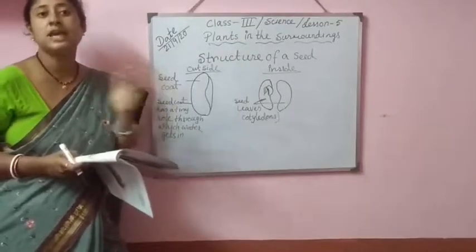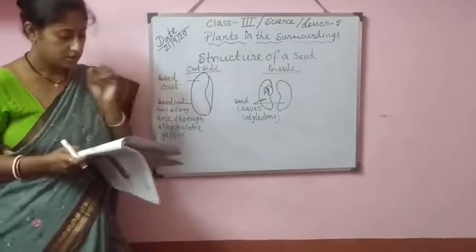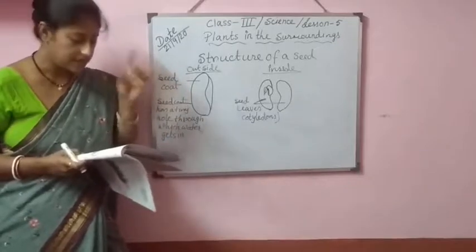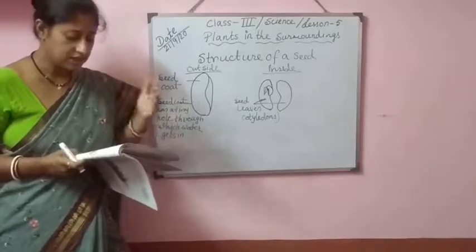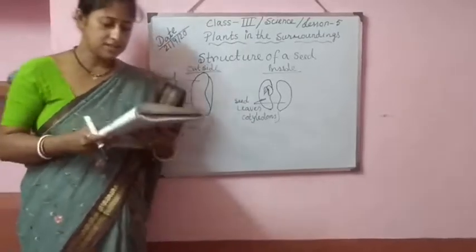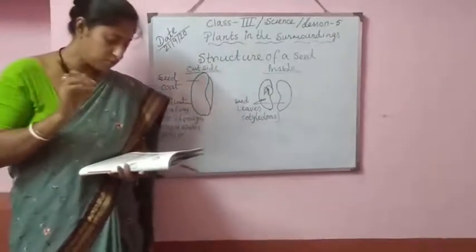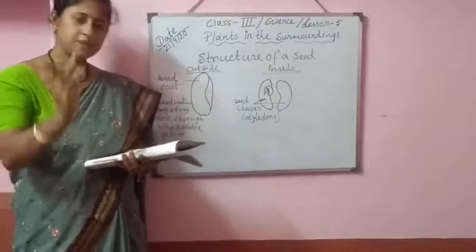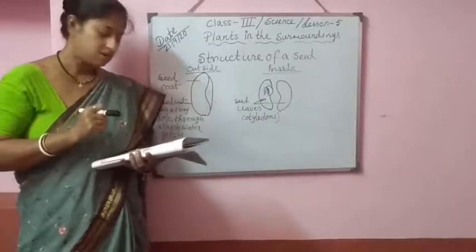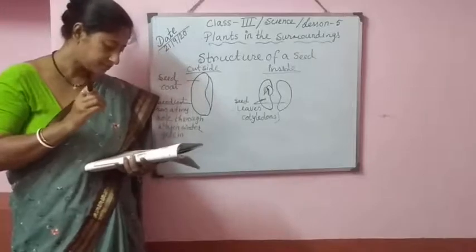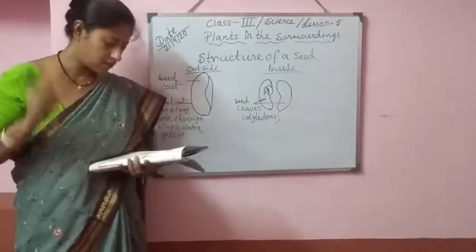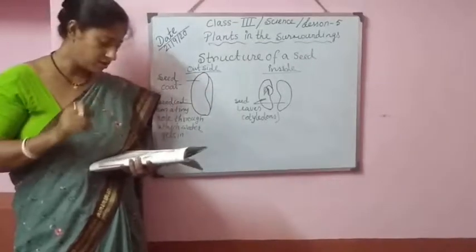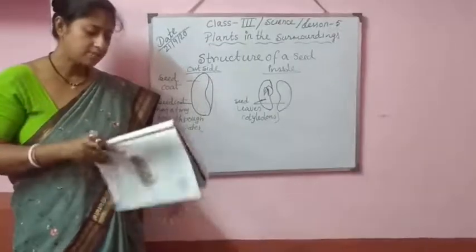If any question comes about the difference between monocot seed and dicot seed: the first difference is that monocot seeds have a single cotyledon, meaning one cotyledon, and dicot seeds have two cotyledons. Monocot seeds produce plants with long and narrow leaves, and dicot seeds produce plants with different shapes and sizes. Examples of monocot seeds are wheat, corn, and rice. Examples of dicot seeds are pulses and bean.